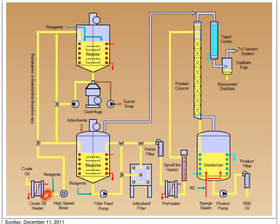At this point, some reagent will be added for the degumming process. This can be in the form of phosphoric acid or citric acid for acid degumming, or we can use hot water if the oil contains hydratable phosphatides. The gums or phosphatides will be removed at this stage. Usually a high-speed mixer is required here to mix the oil and reagents intimately and uniformly.